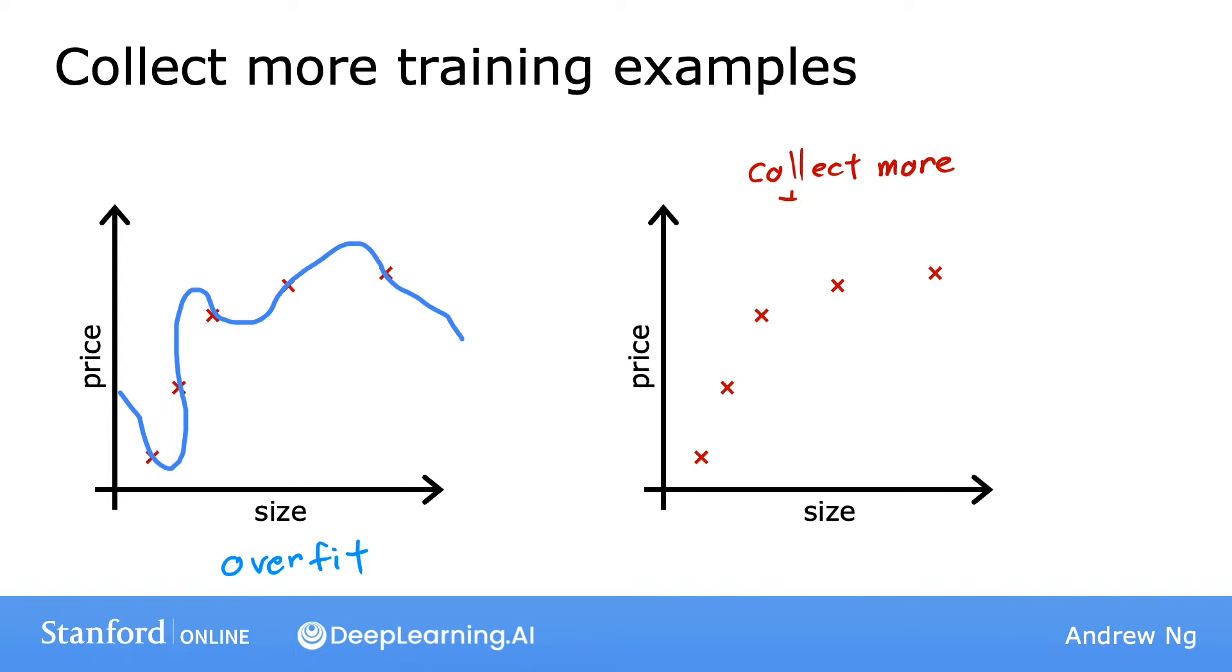One way to address this problem is to collect more training data. So that's one option. If you're able to get more data, that is, more training examples on sizes and prices of houses, then with the larger training set, the learning algorithm will learn to fit a function that is less wiggly. So you can continue to fit a high order polynomial or some other function with a lot of features. And if you have enough training examples, it will still do okay. So to summarize, the number one tool you can use against overfitting is to get more training data.